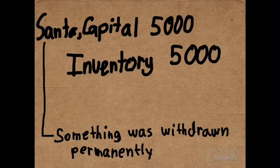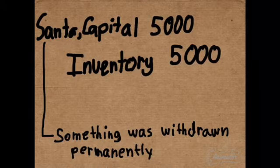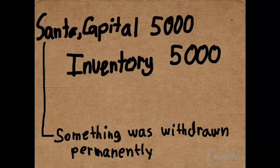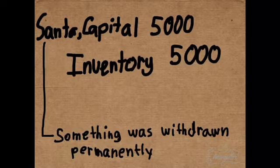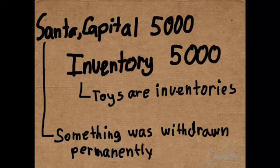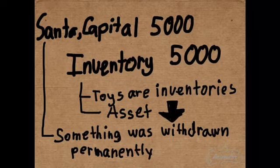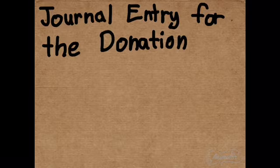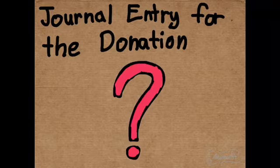Remember that we always debit the capital account because something was withdrawn. We use the capital account instead of drawings because it is presumed that the toys are withdrawn permanently since they will be donated. We use the account title Inventory because a toy is something that can be sold within the current year, and we credit it because it was withdrawn from the company, meaning the asset decreases.